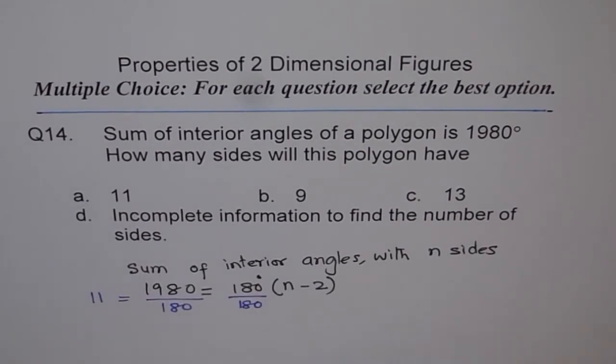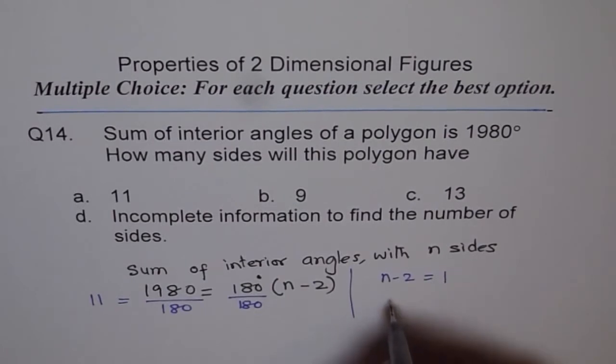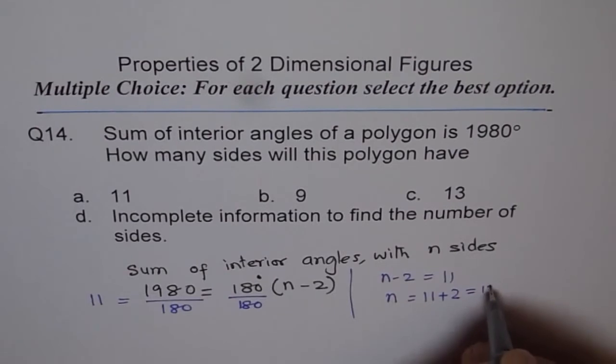That means n minus 2 equals 11. So n equals 11 plus 2, which is 13.